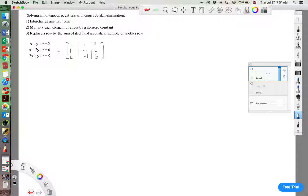Whatever we do to the left side, we're going to do to the right side. We want to end up with the identity matrix over here 1 0 0 0 1 0 0 0 1. And then on this side, we'll have the answers.